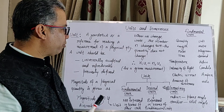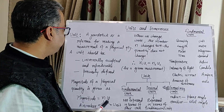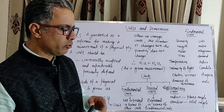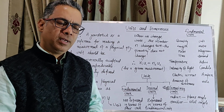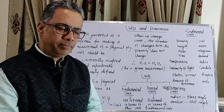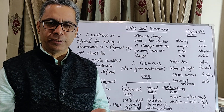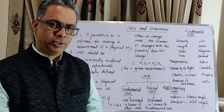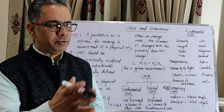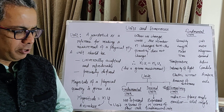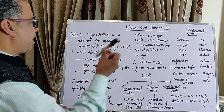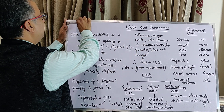Let's talk about a very basic idea about units and dimensions. We'll also talk about dimensions in later videos, but to start with — what is a unit? Essentially, a unit is a reference or a yardstick which we use for making a measurement. For instance, if I were to measure the length of the room I'm standing in, or perhaps the length of this board, I can choose this marker pen as the yardstick.